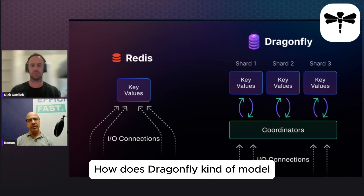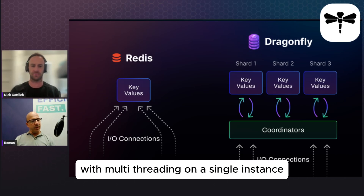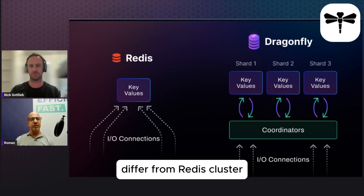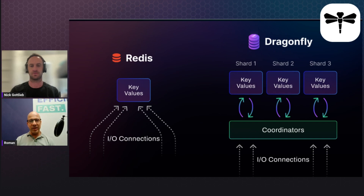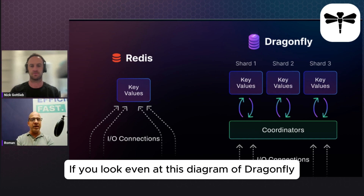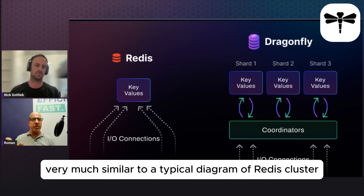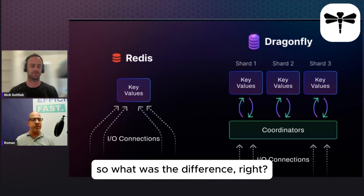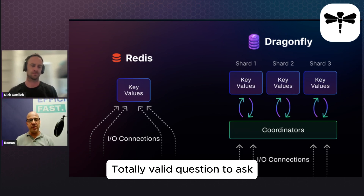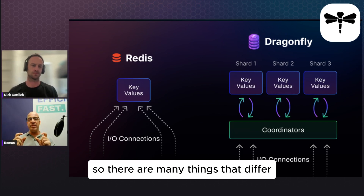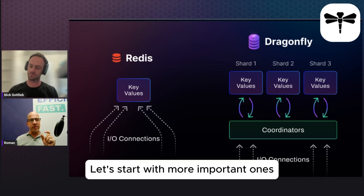How does Dragonfly's multi-threading on a single instance differ from Redis Cluster? Great question. Actually, if you look at this diagram of Dragonfly, it's probably very much similar to a typical diagram of Redis Cluster. So what's the difference? There are many things that differ. Let's start with the more important ones.